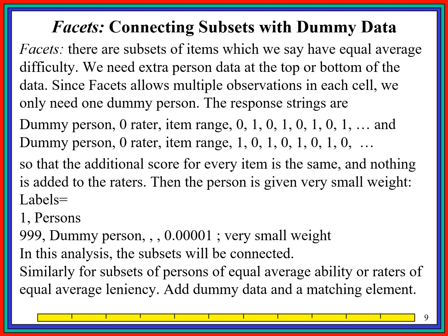We can do the same sort of thing in FACETS using dummy persons. For the facets we're not interested in, we just use 0 in the data so that particular facet is inactive. We have a dummy person, and FACETS allows us to enter as many data lines as we like for each person. We add two data lines for a dummy person — a 0101 data line and a 1010 line — and give that person a very small weight. This ties all the items together so that all items are connected and the persons can be compared.